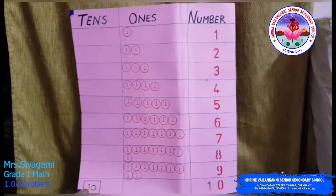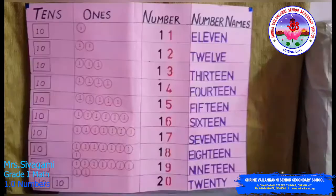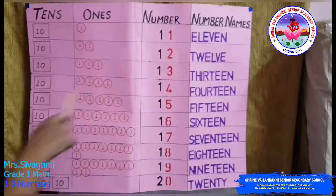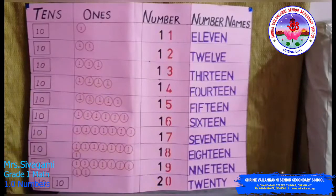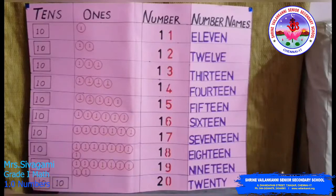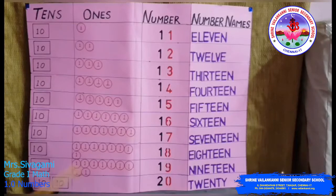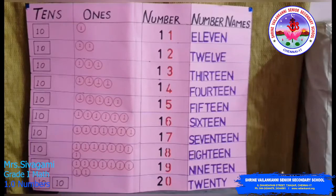So we don't show 10 as '10 ones' — we show it as '1 ten.' Now we are going to see numbers 11 to 20, and how we are going to build them. We already saw that number 10 is made up of 10 ones, that is 1 ten. '10 ones' and '1 ten' are the same; they both have the same value, but we represent 10 as 1 ten.